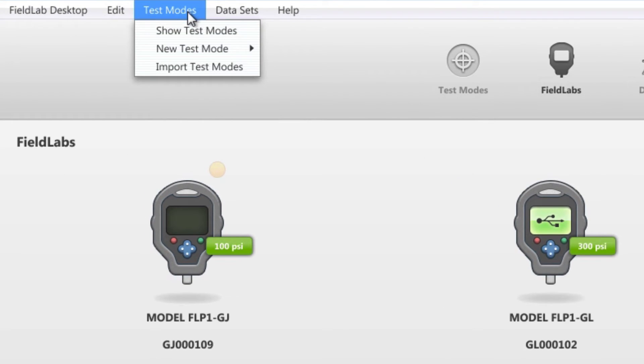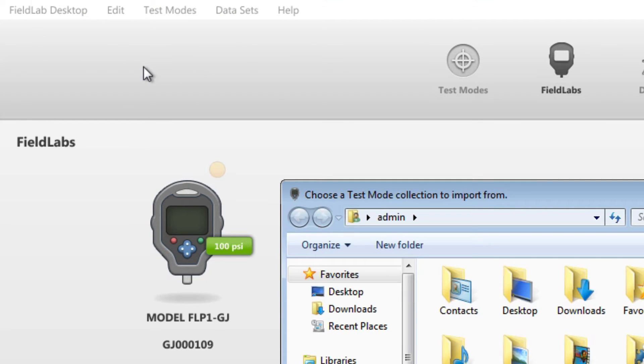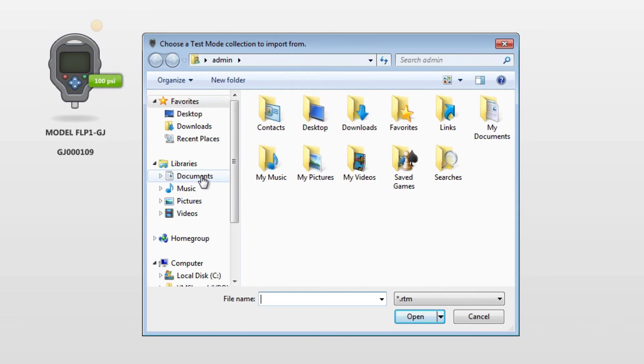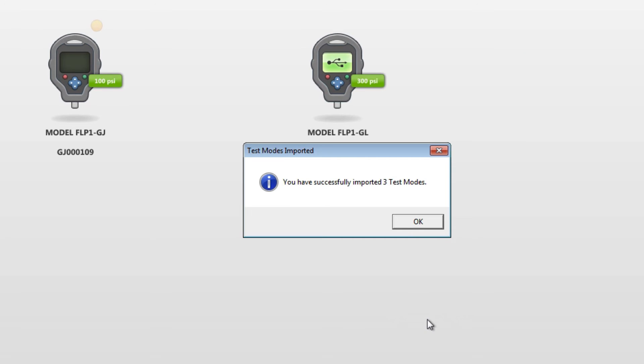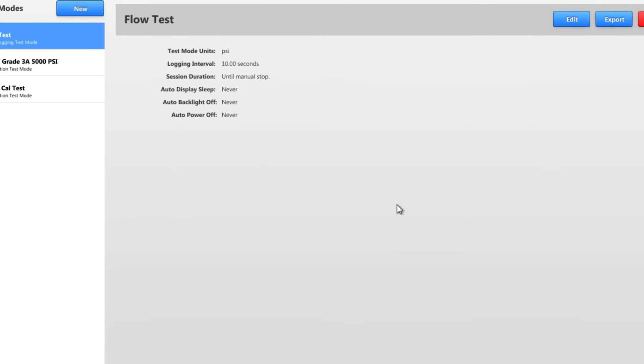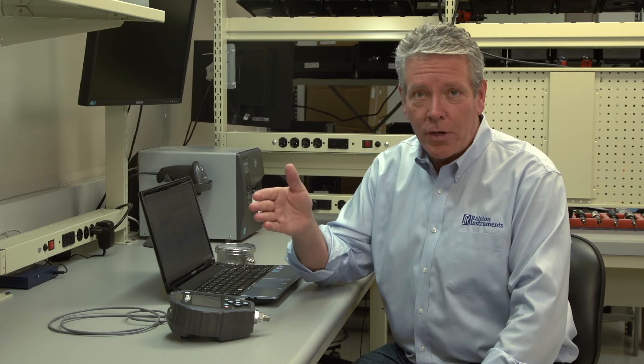Click on the test modes tab in the header. Then select import test modes from the menu. Then browse to whatever folder you saved the file to and select it. It will then appear in your library of test modes, which you can then load onto your Field Lab.